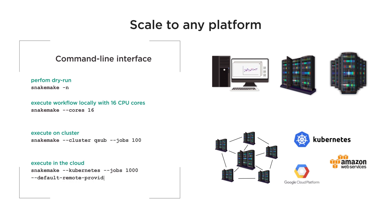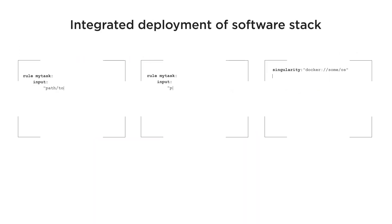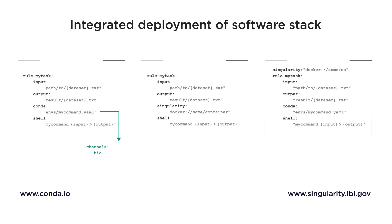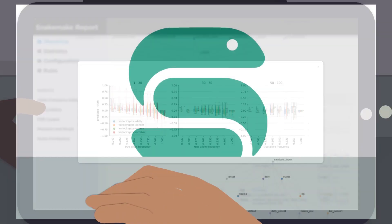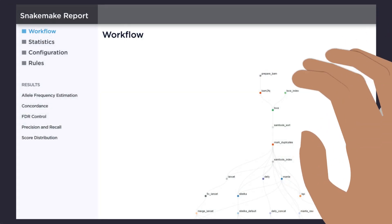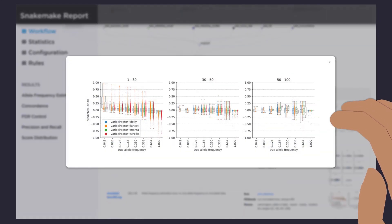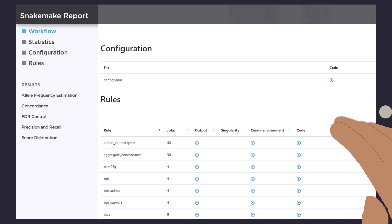Snakemake can automatically deploy the necessary software stack in appropriate versions. For this, it integrates with the Conda package manager, Singularity container virtualization, or a combination of the two. Snakemake can also automatically create self-contained interactive reports entailing results, code, runtime information, and documentation pertaining to the data analysis. Such reports provide a transparent and sustainable summary of analysis results.